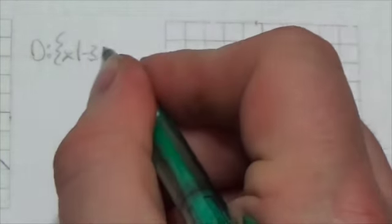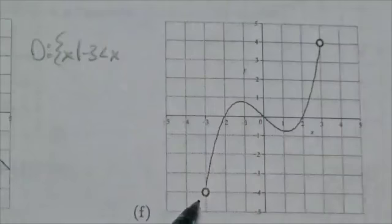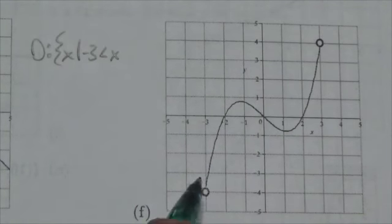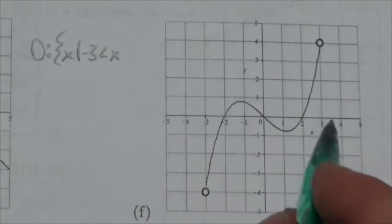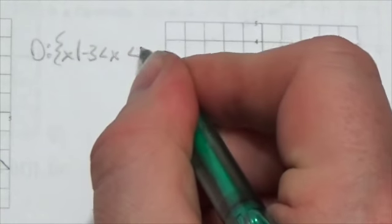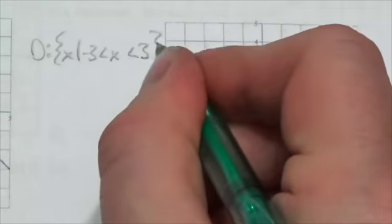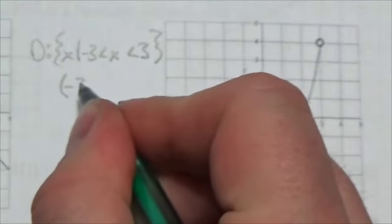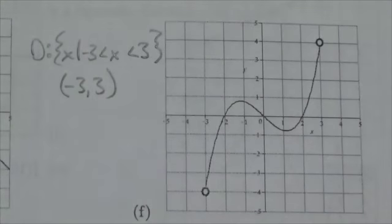So negative 3 is the least value that I get to, but I'm not including it. But then it's all the values that are greater than negative 3. But it stops at 3. It doesn't even include that. So, up to a maximum of positive 3. Now, in interval notation, I would put the soft brackets on there to indicate that I'm not including those endpoints.